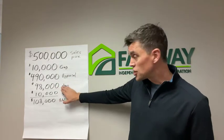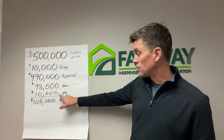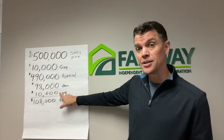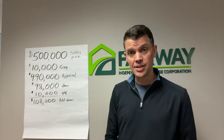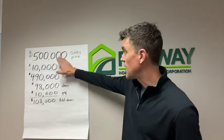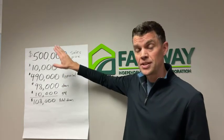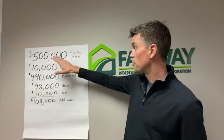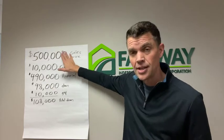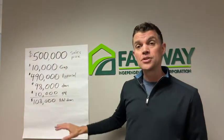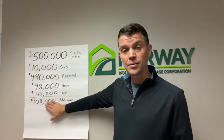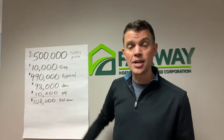In addition to the down payment, you have to come up with that $10,000 gap. So in this example, you would have a $108,000 down payment. Going back to the $500,000 property: if the property appraises at $500,000, that's a $100,000 down payment — 20% of $500,000. So you have to come up with more money out of your pocket with this appraisal gap coverage.